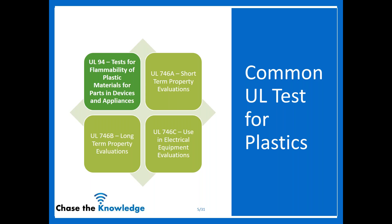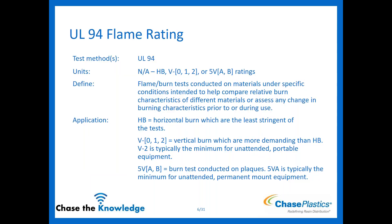Starting with UL 94 for flame. UL 94 addresses the flammability of the material itself. There are a handful of different ratings under this test. You've got your HB, which is horizontal burn. You have your vertical burns — V0, V1, and V2. And then you have your 5Vs — 5VA and 5VB. Your 94 flame rating: the flame and burn test is conducted on these materials, and the conditions are used to compare the relative burn characteristics of different materials to see how they're going to perform in use.